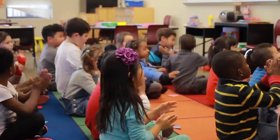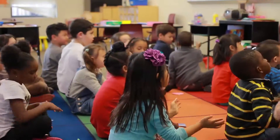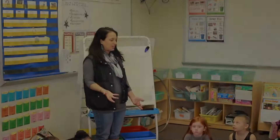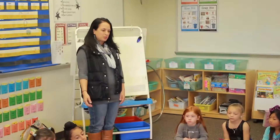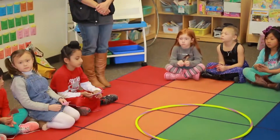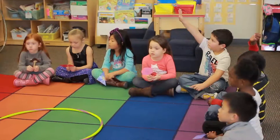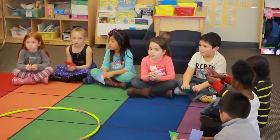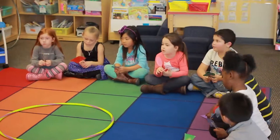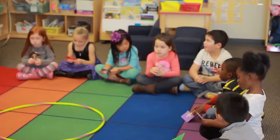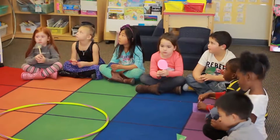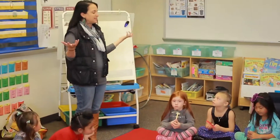The other thing about shapes is we sort shapes by their attributes. Remember we used that word earlier? Attributes are a way to describe our shape. What's an attribute about your shape that you're holding? My attribute of my shape is that it's round and it has zero sides and zero vertices. Wow, he told us a lot about his shape — it's round and has zero sides and zero vertices.